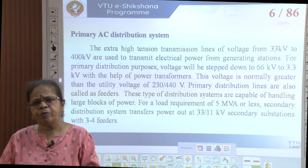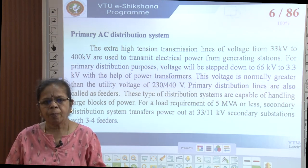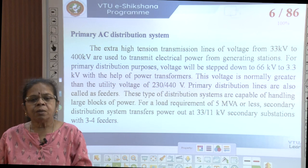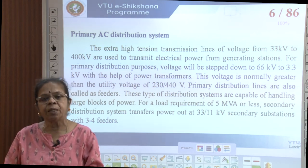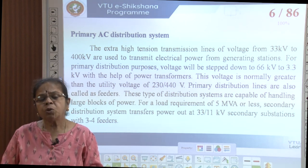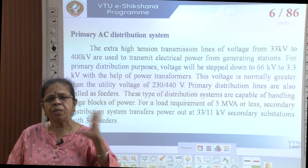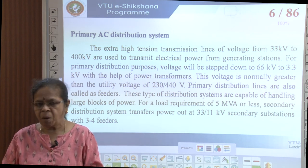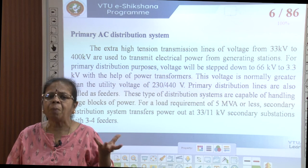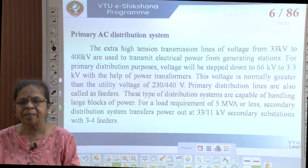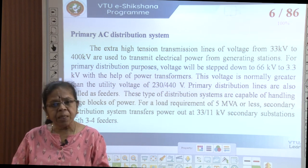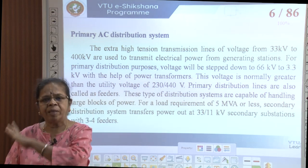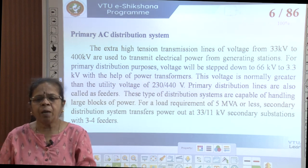These are the various ways of classifying distribution systems. We also have primary and secondary distribution. Higher transmission voltages from 33 kV to 400 kV or above are used to transmit power from generating stations to substations. Normally 400 kV and above is commonly used; 33 kV is used when generating plants are small and closer to the load center. For primary distribution, these voltages are stepped down to 66, 33, 22, 11, 6.6, or 3.3 kV with the help of power transformers.